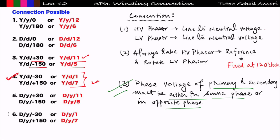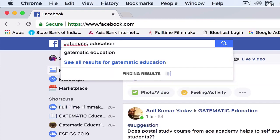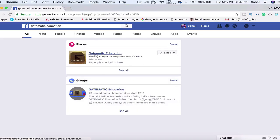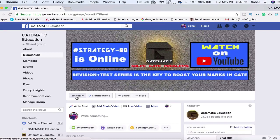That's all about this lecture. In the next lecture we will see how to draw the phasor diagram of DY11 and DY5, and then in the last lecture we will cover DY1 and DY7. If you understood the concept, please like this video. You can put your doubts in the comments below or ask in our Facebook group — type 'Getmatic Education' in the search bar, like the page, and click join on the group.